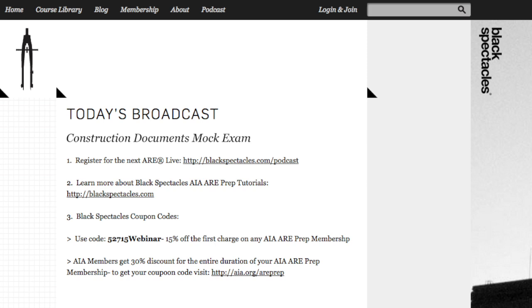And to learn more about our AIA ARE prep curriculum, go to blackspectacles.com. We'll include a link in the show notes. And for those of you who are ready to prepare for the ARE, you can use a 15% coupon off the first charge on any AIA ARE prep membership with code 52715WEBINAR. That will expire on June 15th.